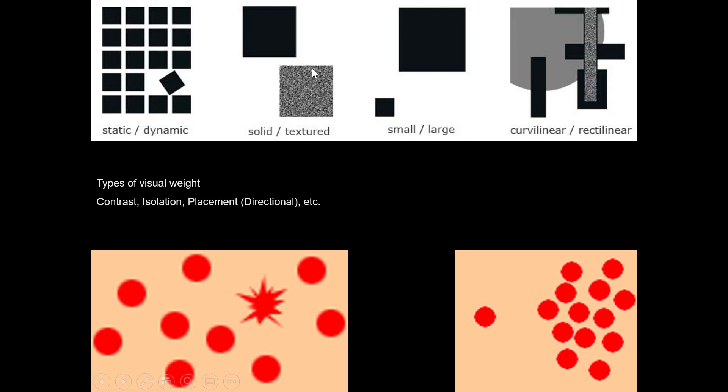Building on some of the things that we talked about when we were talking about Gestalt, anything that is a little bit more complex is going to have greater visual weight. So the textured square is going to have more visual weight than the solid square.